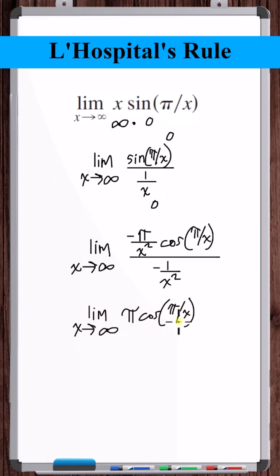Okay, plugging in infinity, pi over x goes to 0, cosine of 0 is 1, so this goes to 1. Pi times 1 is pi. So this limit is equal to pi.